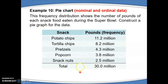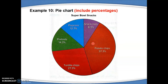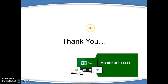Lastly, pie chart is used to represent nominal and ordinal data. Using data for snack foods and the number of pounds eaten during the Super Bowl, to create the pie chart we need to find the percentage for every section, making sure the total percentage equals 100%. You can find the link on how to create the graphs and charts using Microsoft Excel in the description below. Thank you.